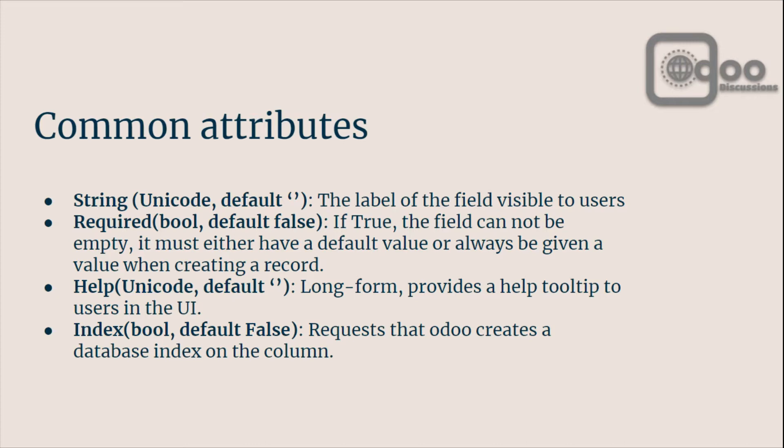Required is another attribute — if it is True then the field cannot be empty, so you will not be able to save a record without filling this field if required is True. By default its value is False and you can always give a default value like False or True. Help is another attribute of a field, of type unicode, and by default it is just an empty string — it is the long-form description of the field where you can add the purpose of the field.